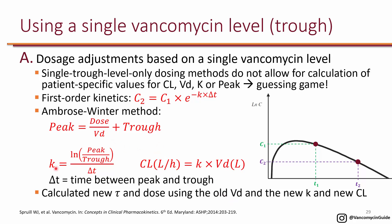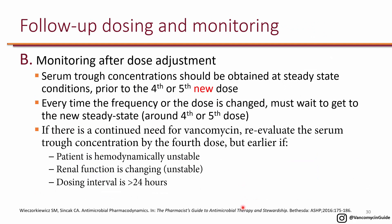You can then recalculate clearance based on the new K and the volume of distribution from population kinetics. Once you have these new values, calculate the new tau and dose using the old volume of distribution and the new K and clearance. Anytime you make a change to the dose, get a trough at steady state — wait for the level prior to the fourth or fifth dose of the new regimen, since each change means the new regimen is not yet at steady state.